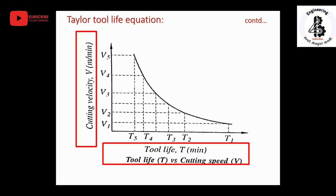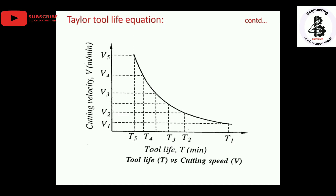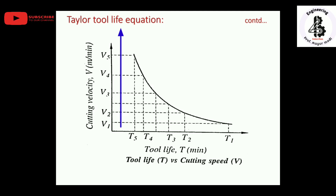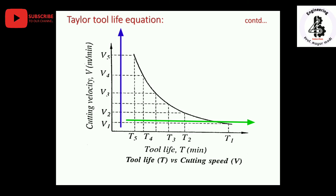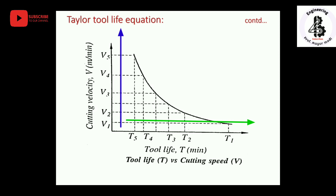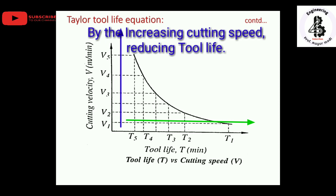Now looking at the diagram of tool life in minutes versus cutting speed: the x-axis represents tool life in minutes and the y-axis represents cutting velocity or speed. For five different speeds V1 through V5, if we use V1 (the lowest speed), it gives the longest tool life. As speed increases up to V5, the tool life reduces from T1 to T5. We can conclude that increasing cutting speed reduces tool life.